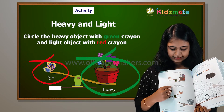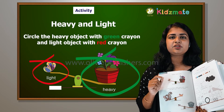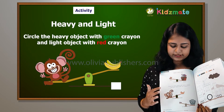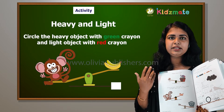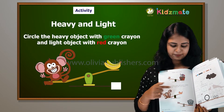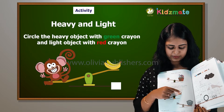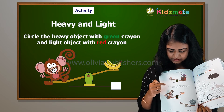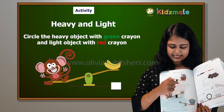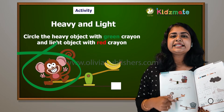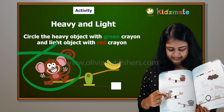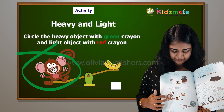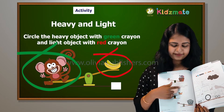Green crayon for heavy objects and red crayon for light objects. So now, look — monkey and banana. Which is heavy? The monkey is heavy. So what color do you use for the heavy object? Green. So you give a green color circle here, and here we call it red color.